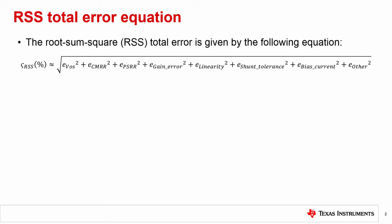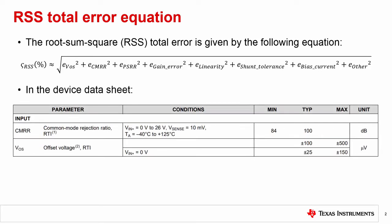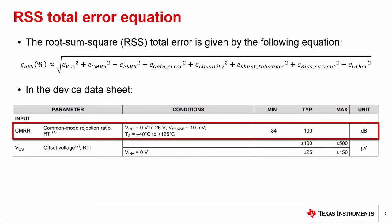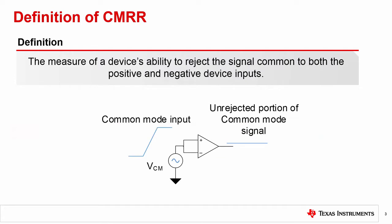CMRR is a specification that is provided in the electrical characteristics table of the datasheet, as shown in this table. So what is common mode rejection ratio? Common mode rejection ratio is the measure of a device's ability to reject the signal common to both the positive and negative device inputs.